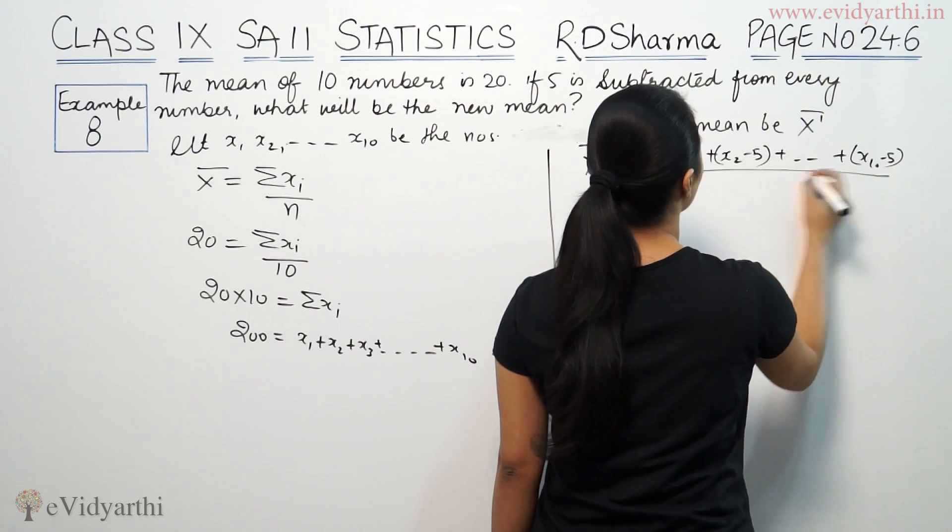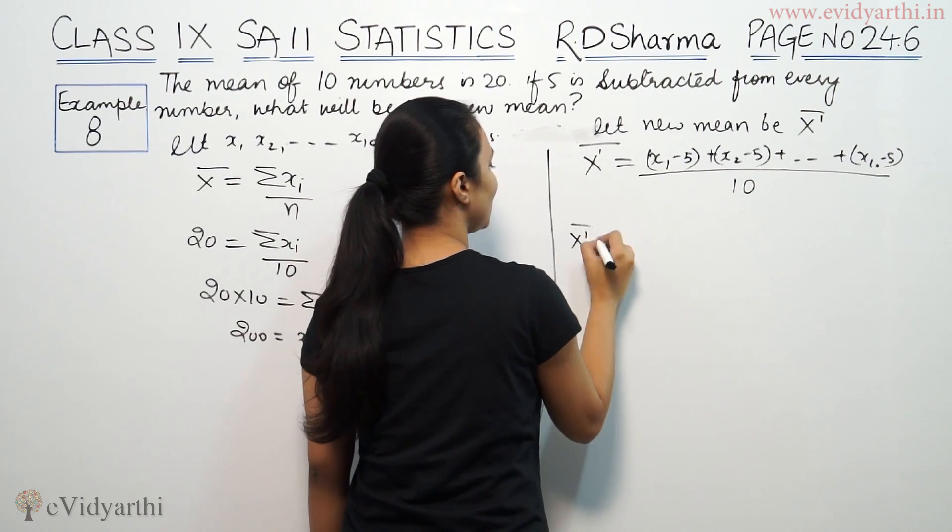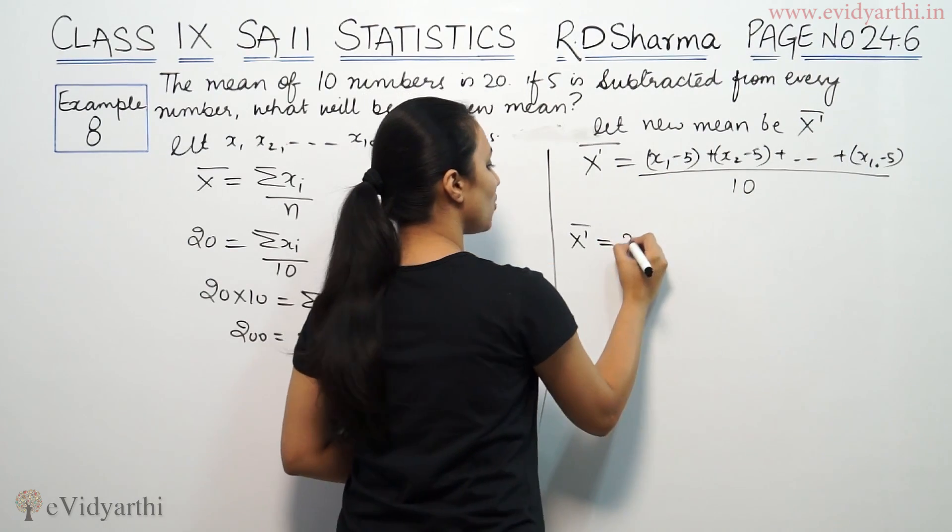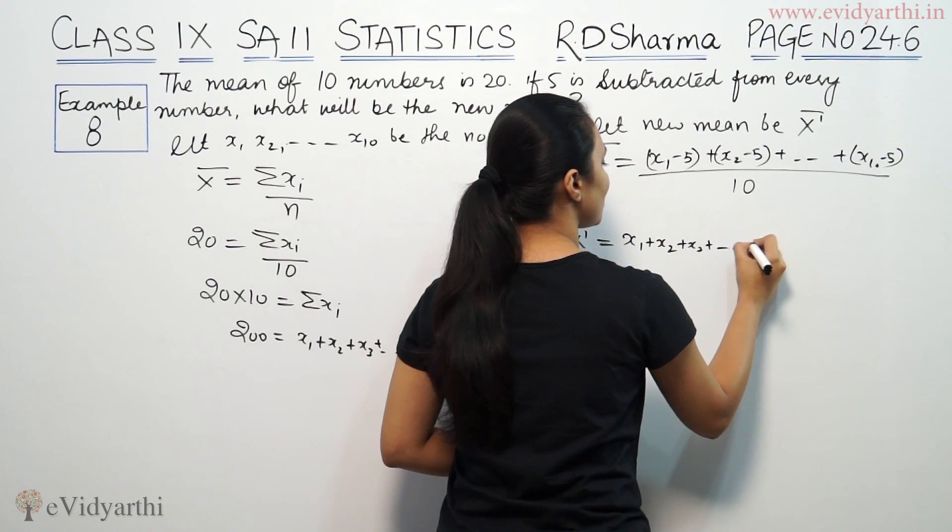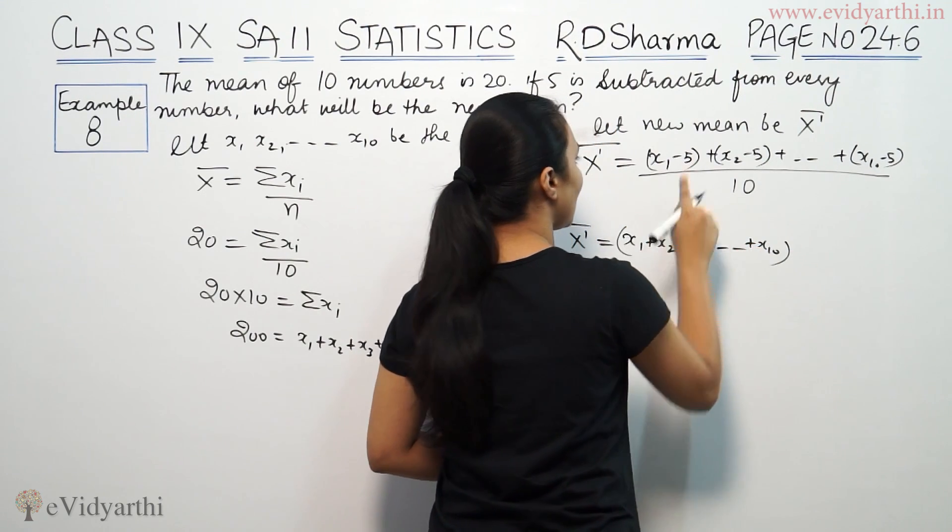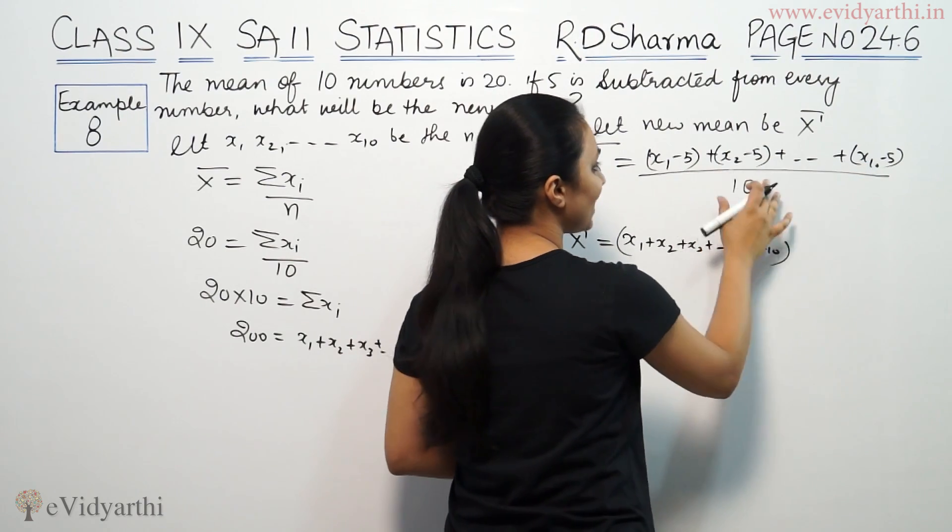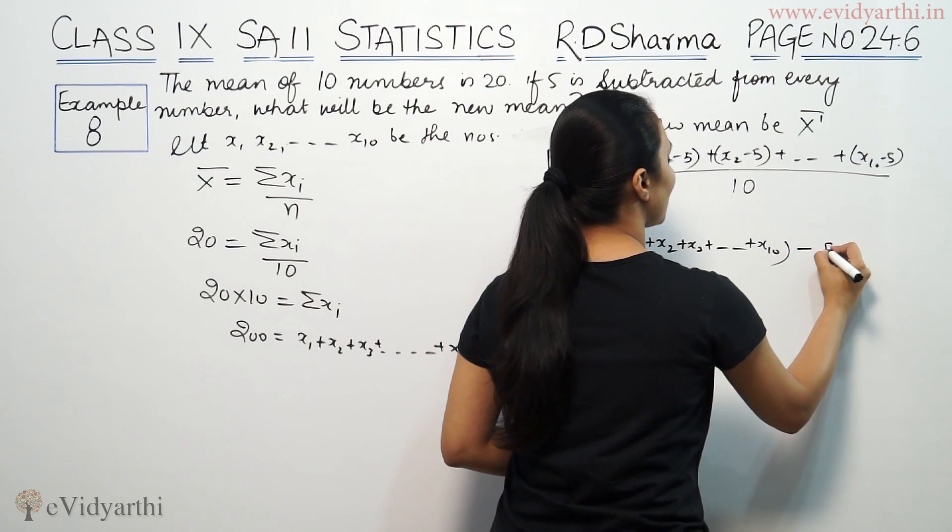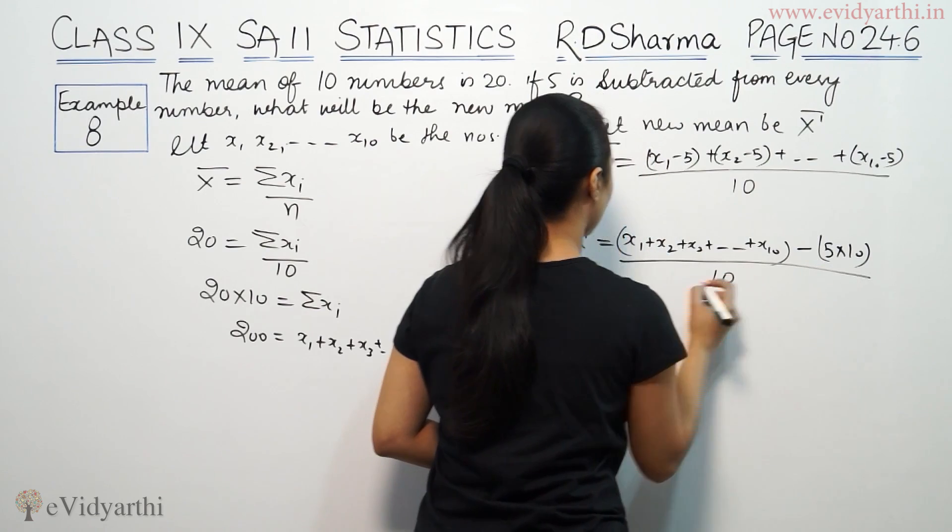As we have 10 numbers like x1 + x2 + x3 + dot dot dot + x10, and minus 5 we have 10 times like this because it is 10 numbers, so minus 5 × 10 by 10.